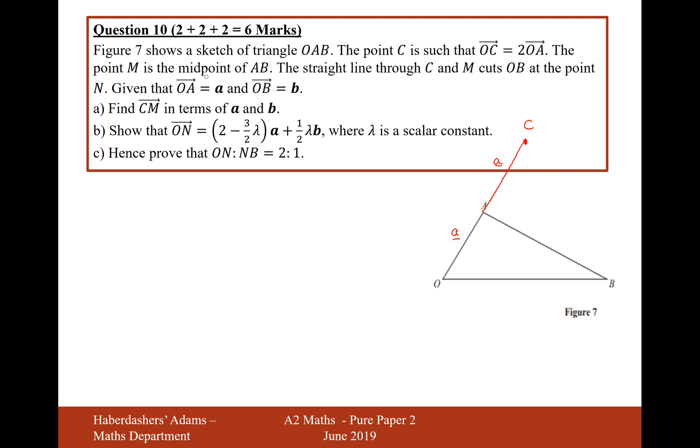The point M is the midpoint of AB. So this point M here is half this distance from here and half this distance from here. The straight line through C and M cuts OB at N.